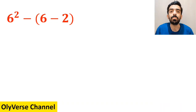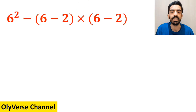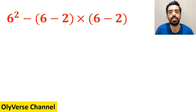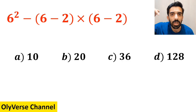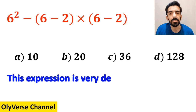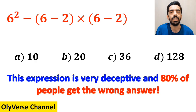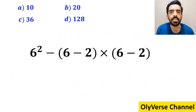What is the value of the expression 6 squared minus (6 minus 2), then multiplied by (6 minus 2) again? Which option do you think is the correct answer? This expression is very deceptive and 80% of people get the wrong answer. Let's go through the steps together.